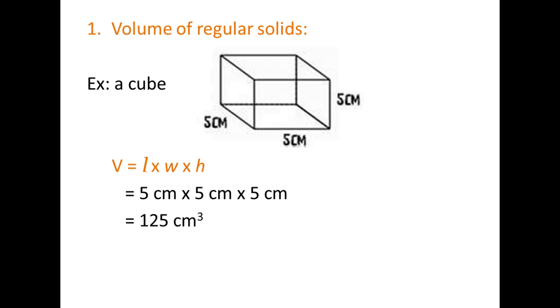5 times 5 is 25, 25 times 5 is 125. Don't forget, you're going to multiply the units also. Centimeters times centimeters times centimeters is centimeters cubed. Just like if you had x times x times x, that would be x cubed, same thing here.